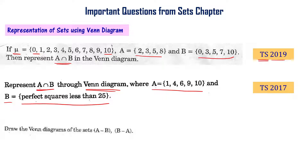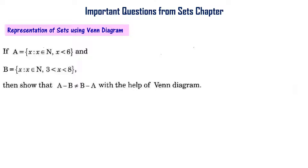Draw the Venn diagrams of the sets A minus B and B minus A. If A is a set of elements x such that x belongs to N and x is less than 6, and B is a set of elements x such that x belongs to natural numbers N and 3 is less than x less than 8, then show that A minus B is not equal to B minus A with the help of a Venn diagram. This is from the 2016 final exam.